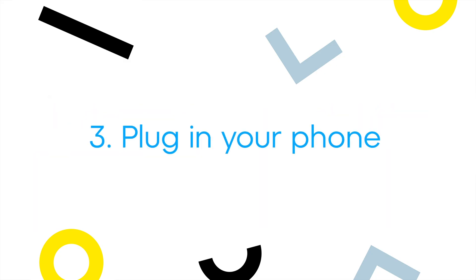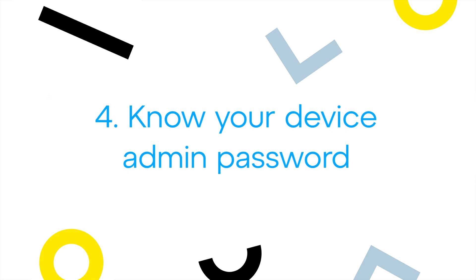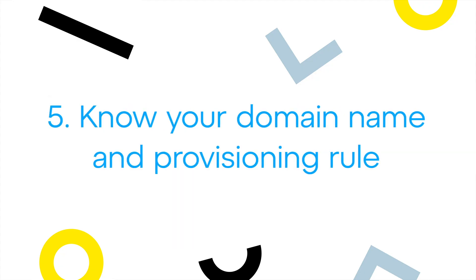Third, verify that you have properly plugged in your phone. Fourth, know your device admin password. This is often needed to perform admin functions on your desk phone. Fifth, you should know what your domain name is as well as the provisioning rule for your company. The domain name can be found in your admin portal.